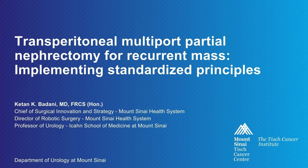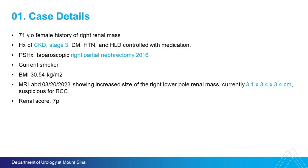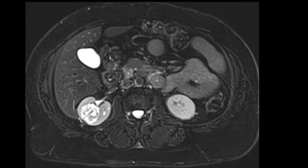Let's go to the case. I was asked to show a transperitoneal approach, multiport partial nephrectomy. This is a recurrent renal mass on the right side. I'm going to show how we implement our standardized procedures. So, a 71-year-old female had a history of a partial nephrectomy on the right side in 2016, a little bit on the large side, BMI of 30. Here you can see the completely endophytic lesion — recurrent tumor on the same side highlighted here.